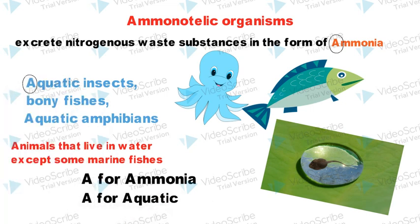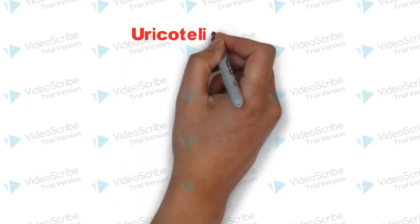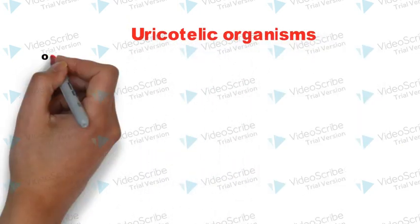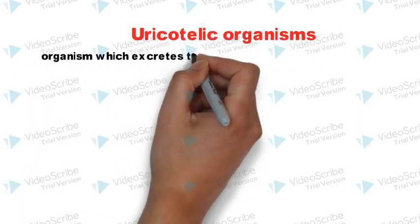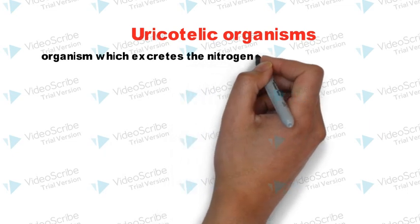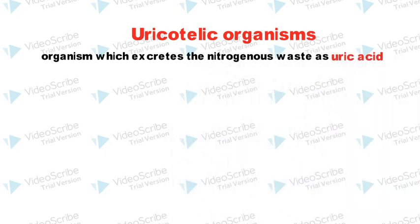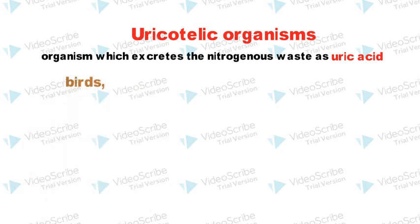Let's move on to Uricotelic organisms. These are the organisms which excrete the nitrogenous waste as uric acid. The examples are birds, insects, and reptiles.